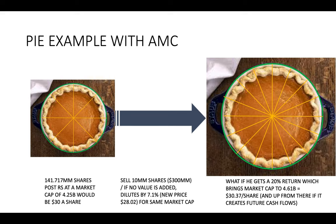If he sold these 10 million shares and gets a 20% return, it would actually add value — creating a market cap of $4.6 billion, and every share would be $30.37 at that point, even with the added shares. And that's not even counting future cash flows. In future years, it keeps adding to the value of the share. So there's a way where you can dilute — which is what the Gasparinos of the world will talk about — but you notice they never talk about the next step: why did you dilute? What are you going to do with that capital? Will it create value?